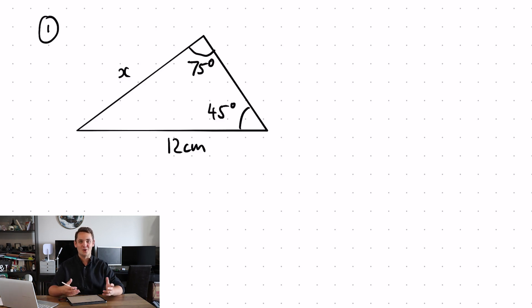Hopefully you've had a good go at that question, so let's have a look at it. So I like to label my unknown side A, which makes the angle opposite capital A, the other side B, angle opposite capital B. Put it into your formula.